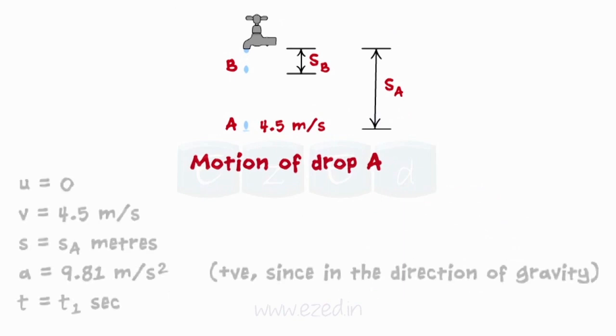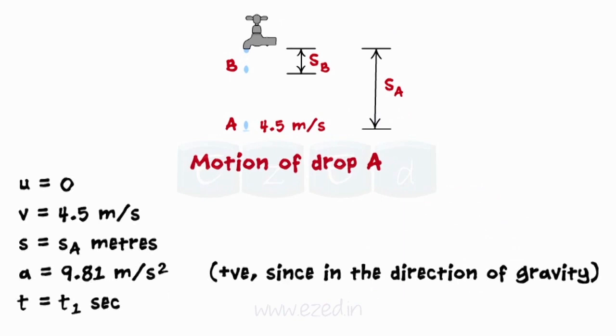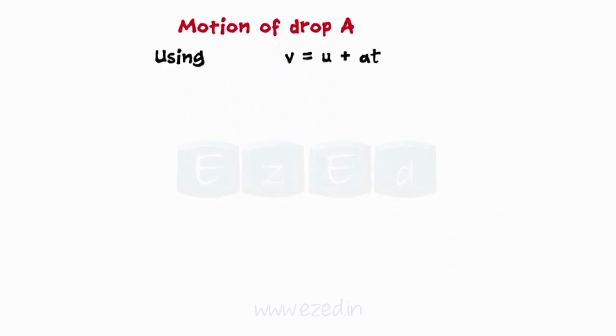Considering the motion of drop A, writing down the initial condition for drop A. As the droplets from the water tap are coming out at a uniform rate, using an equation for uniform acceleration motion, on substituting the values, we get time T1.